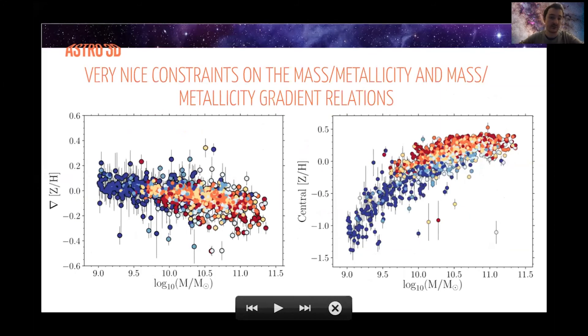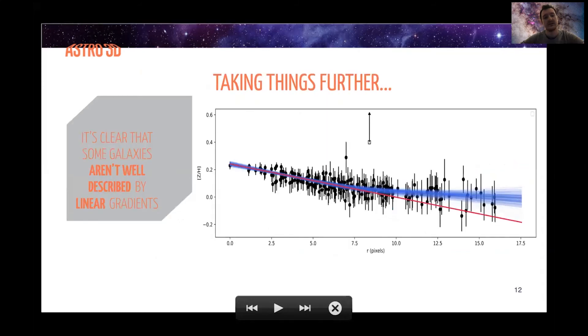We also get nice constraints on some more different relations. So on the left is the gradient in Z on H. That's the gradient of my straight line, plotted against stellar mass. And on the right, it's the central metallicity plotted against stellar mass. The points here are colored by their visual morphology with spirals in blue, ellipticals in red, and then S0s and in between things are plotted in yellow and orange. And as Claudia mentioned in one of her questions before in the chat, a cool thing to do here is to look at whether or not there's an offset in the central metallicity between centrals and satellites. So that's something that I'm very keen to do, just haven't got around to at this moment.